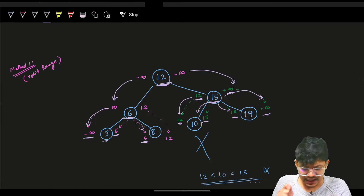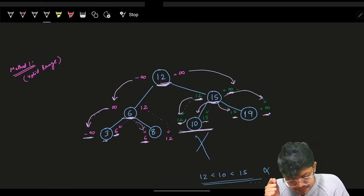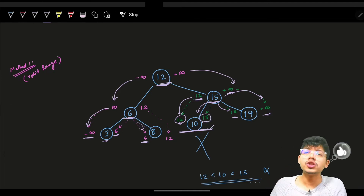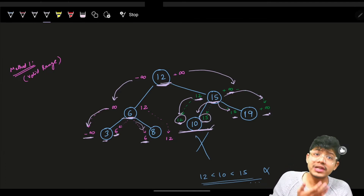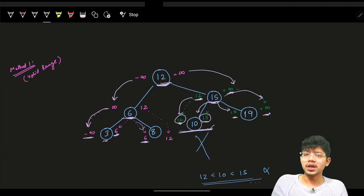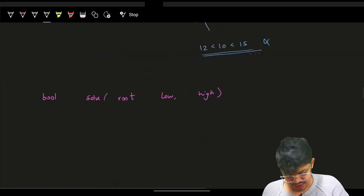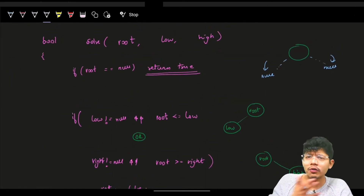For validation: if a node should be more than 12 and less than 15 but the number is 10, which is not in that range, we simply return false because it is not a valid binary search tree.